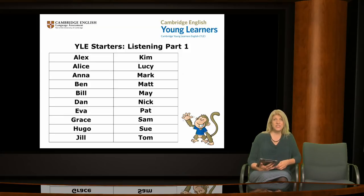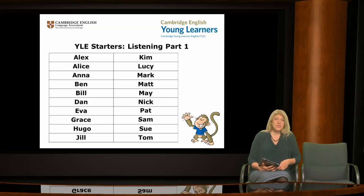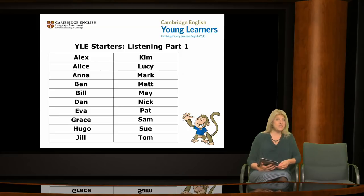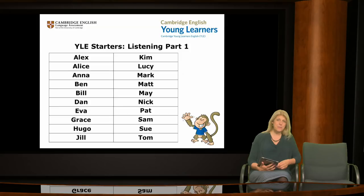It's also a good idea to draw your students' attention to which are boys' and which are girls' names. To reinforce this in a fun way, you could ask your students to stand up and jump or step left for a girl and right for a boy as you call out names at random. Four names on this list are, of course, gender neutral: Alex, Kim, Pat and Sam.